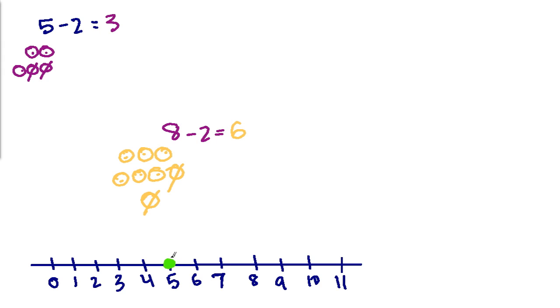But instead of jumping one spot backwards, like if you did with minus 1, you jump two spots backwards because you're subtracting 2. So you would jump 1, 2, so you get 3. So 5 minus 2 equals 3, which is the same thing you got over here.